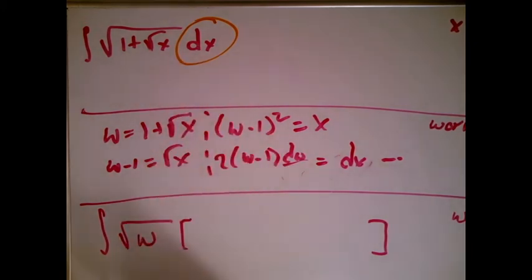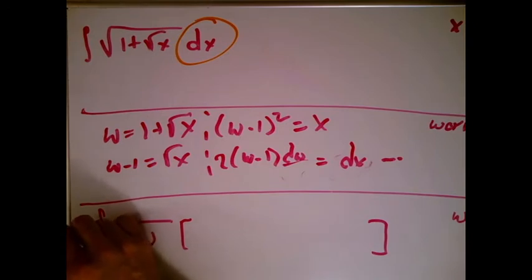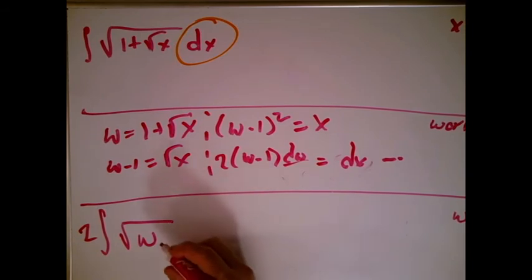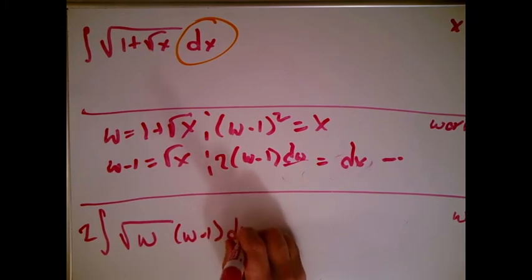I said the dx just looks like 2 times w minus 1 times dw. That says wherever I see a dx in x land, I can put 2 times w minus 1 times dw over in w land. And I'm just going to put that right here: 2 times w minus 1, dw, like that.